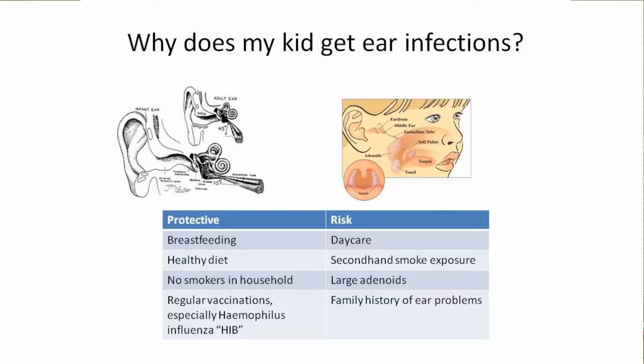Regarding adenoids: the eustachian tube drains from the middle ear space into the back of the nose and top of the throat — which is also where the adenoid tissue is. When the adenoids get really big, they can block the nose so kids can't breathe through it, causing snoring and chronic runny nose. But they can also sit right where the eustachian tube is, blocking it and promoting ear infections.